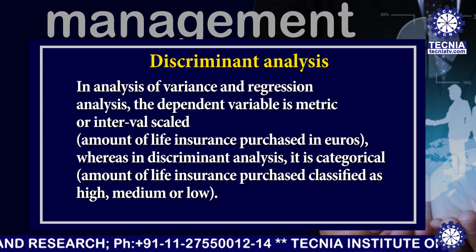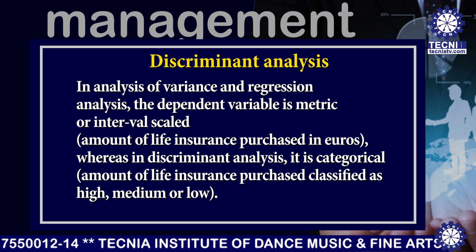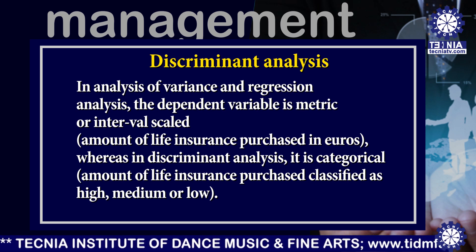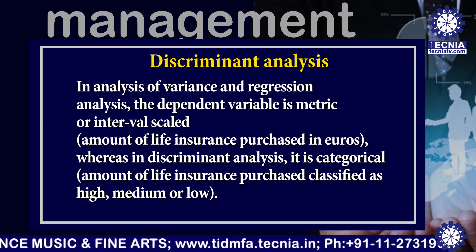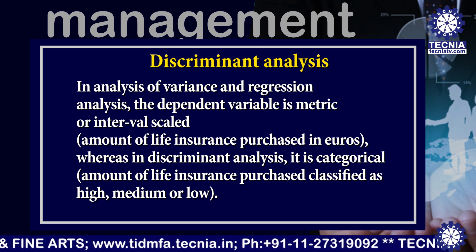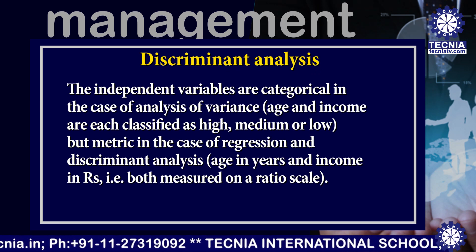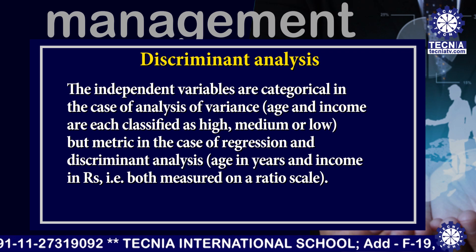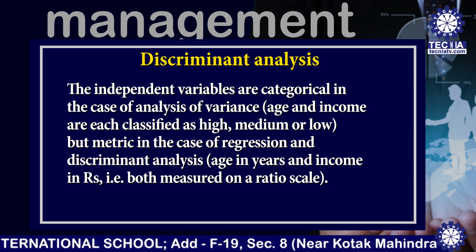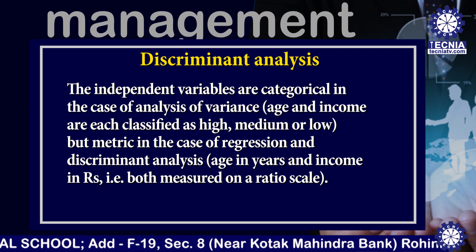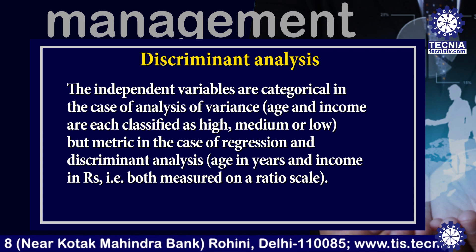The nature of these variables differs, however. In analysis of variance and regression analysis, the dependent variable is metric or interval scale — here, the amount of life insurance purchased in rupees. Whereas in discriminant analysis, it is categorical — that is, the amount of life insurance purchased classified as high, medium, or low. The independent variables are categorical in the case of analysis of variance, where age and income are each classified as high, medium, or low. But they are metric in the case of regression and discriminant analysis — age in years and income in rupees, both measured on a ratio scale.